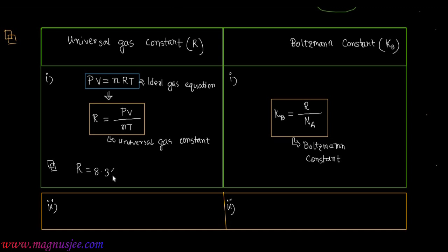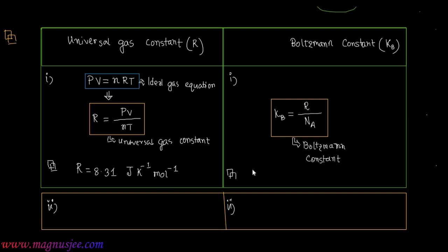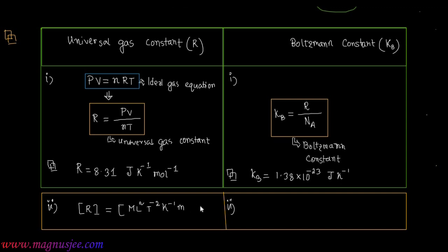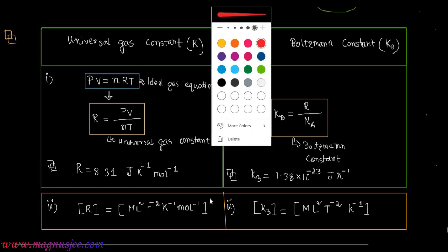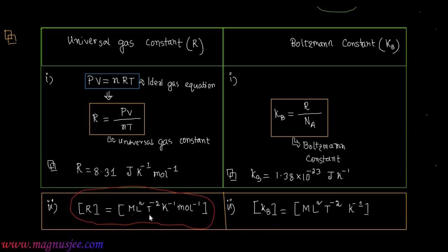The value of universal gas constant R is 8.31 Joule per Kelvin per mole, while the value of Boltzmann constant Kb is 1.38 × 10⁻²³ Joule per Kelvin. The dimensional formula of R is ML²T⁻² Kelvin⁻¹ mol⁻¹, whereas the dimensional formula of Kb is ML²T⁻² Kelvin⁻¹ — differing by the absence of the mole inverse term.